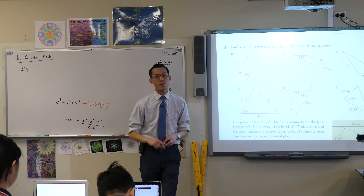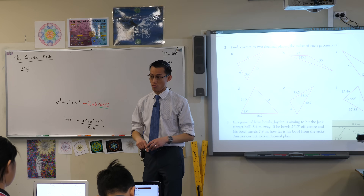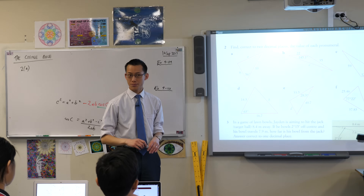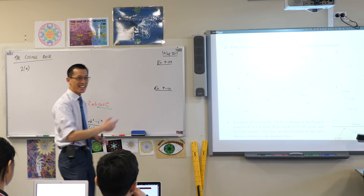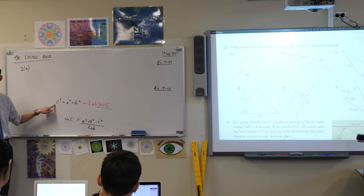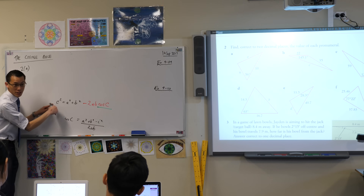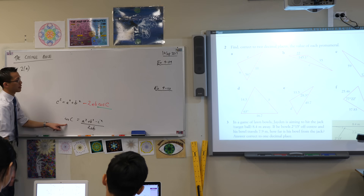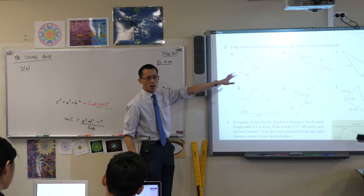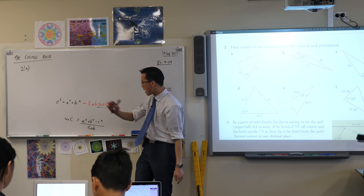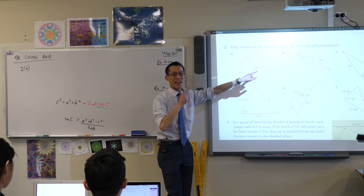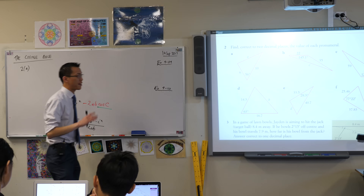Find, to two decimal places, the value of each pronumeral. Are we trying to find a side or an angle? We're trying to find a side, A. So therefore, which of these am I going to use? I'll use this one because this is geared to find the side. This is geared to find the angle. I'm not going to write the formula down because I noticed my formula has the letter A in it. This has the letter A but they're not the same A. So watch carefully.